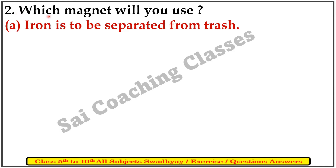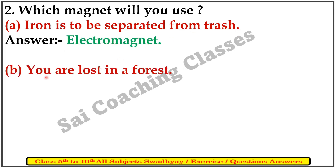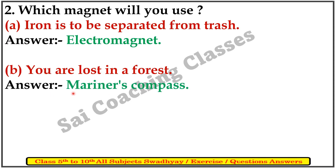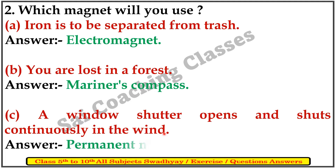Question 2. Which magnet will you use? A. Iron is to be separated from trash. Answer: Electromagnet. B. You are lost in a forest. Answer: Mariner's compass. C. A window shutter opens and shuts continuously in the wind. Answer: Permanent magnet.